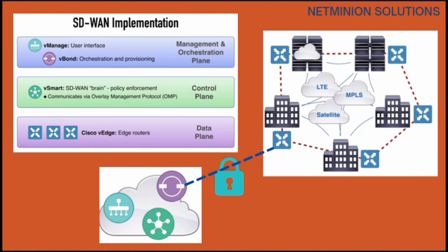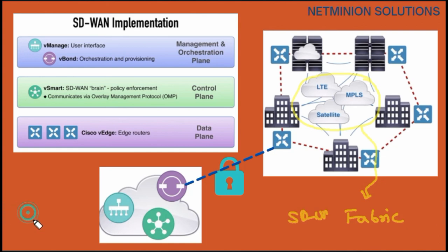Each of these components plays a significant role, though for configuring and operating the network we will focus primarily on vManage in coming videos. The underlay protocol can be anything, while the vEdge devices work on the overlay. This whole structure can be called the fabric — or the SD-WAN fabric. Each vEdge creates an IPsec tunnel with every other vEdge, and also makes a secure DTLS tunnel with the other controllers: vSmart, vManage, and vBond.